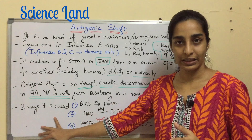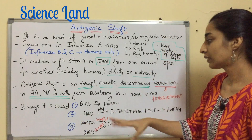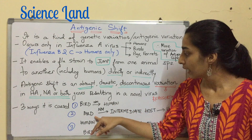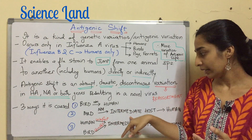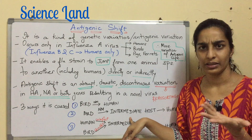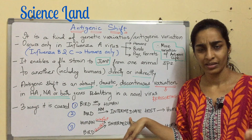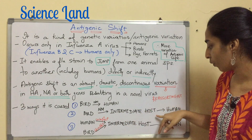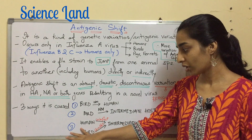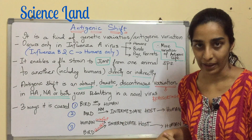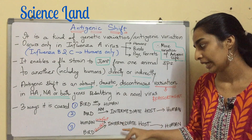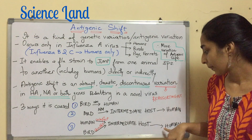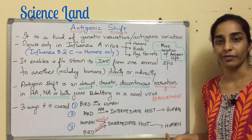There are three ways antigenic shift can occur. First, from a bird, the virus jumps directly to a human without any mutation. Second, from a bird, it infects an intermediate host — which can be a pig, ferret, or any other host — without any mutation, and then transfers from the intermediate host to a human. Third, both human influenza A virus and bird influenza A virus infect the same cell of the intermediate host, and from there it goes on to infect humans.